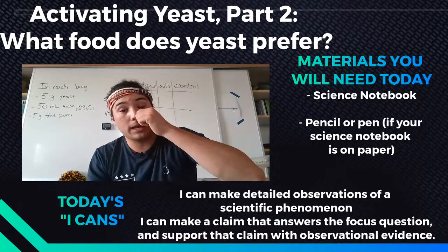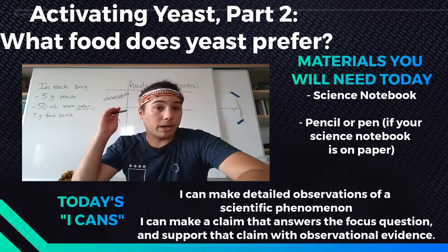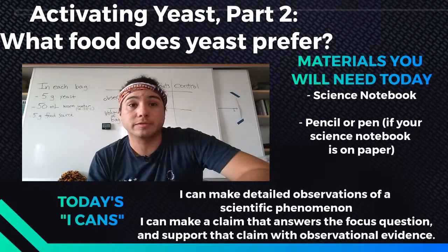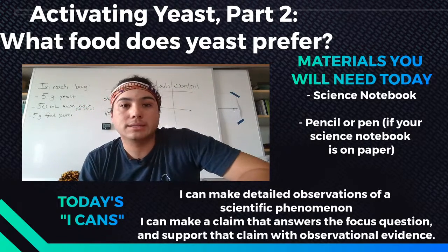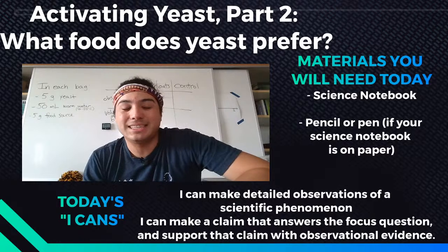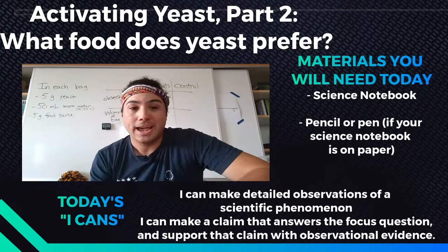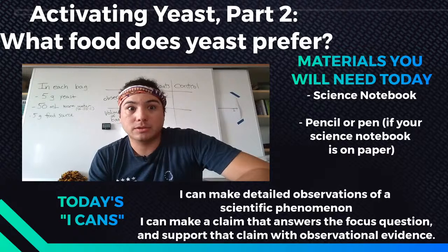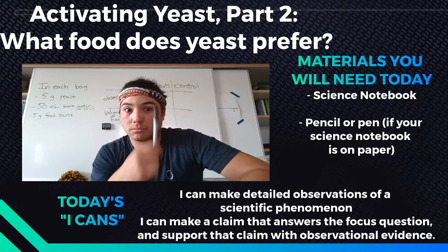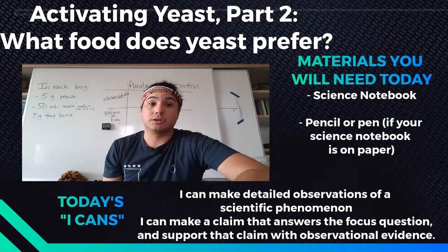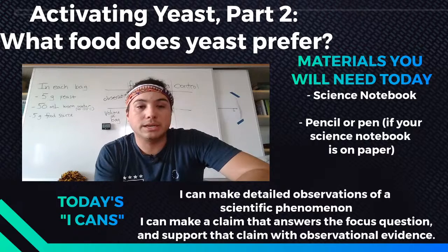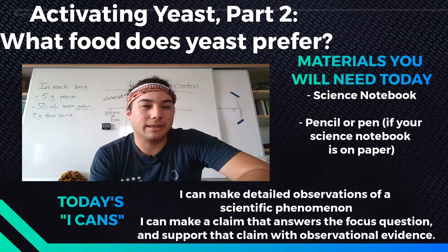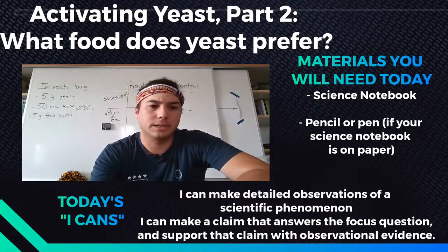You are going to need your science notebook and a pencil or pen. There is a chart behind me that you're going to copy down to take observations. And down here, there's our 'I cans' for today. I can make detailed observations of a scientific phenomenon, and I can make a claim that answers the focus question and support that claim with observational evidence — being able to say, 'I think that yeast prefers blank, and I think that because blank.' Let's get into it.